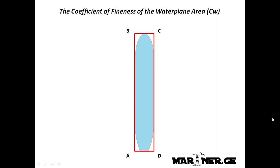If we take this water plane area and put it in a rectangular box with the same length and extreme breadth as the vessel, then water plane area coefficient will be the ratio of area of water plane to the area of rectangular ABCD.